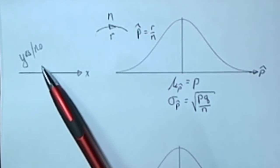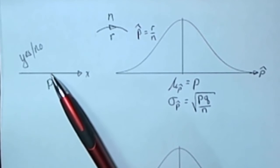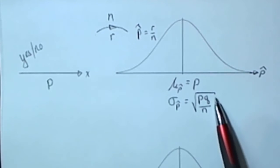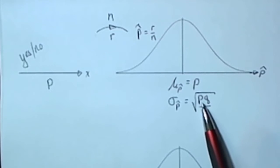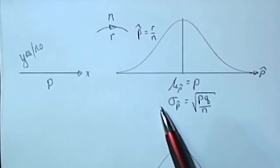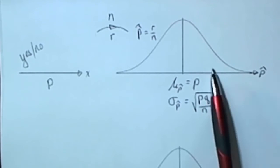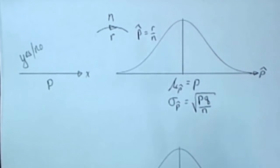Q is the probability of failure and is always equal to 1 minus P. So it's going to be the square root of P times Q divided by N that's going to be the standard deviation of the distribution of these sample proportions.